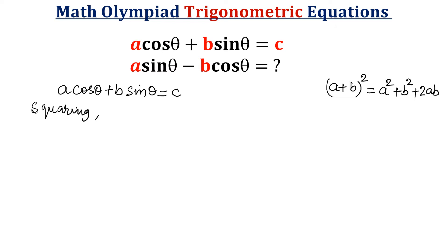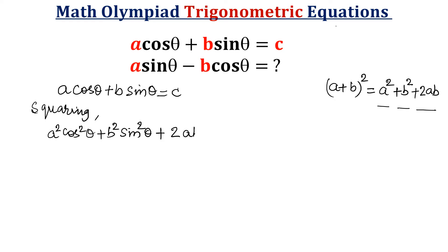Now taking the square of both sides, I will write a² cos²θ plus b² sin²θ — that means a² plus b² terms are done — plus twice of the product, twice ab sinθ cosθ, is equal to c².